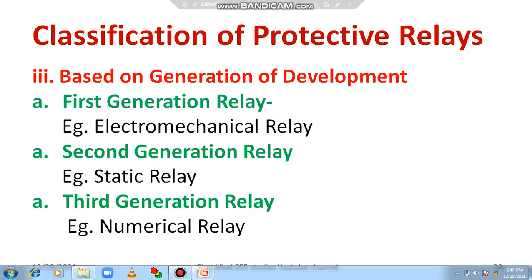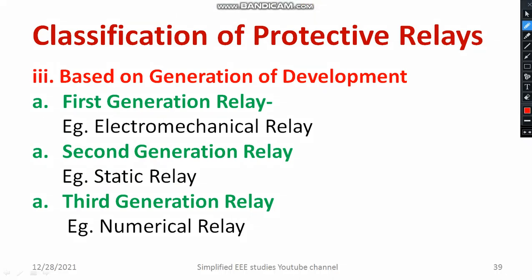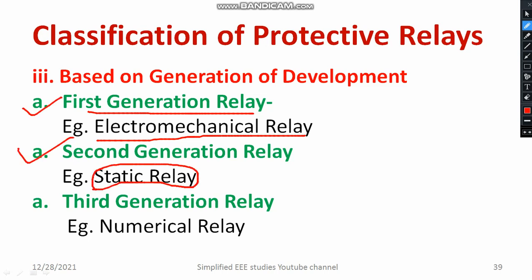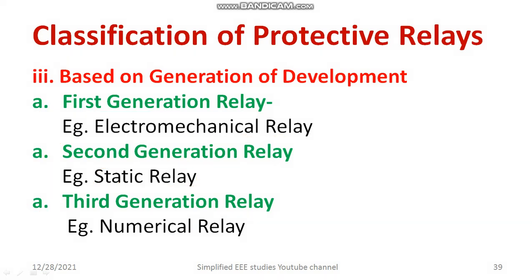Based on the generation of development: the electromechanical relay is known as the first generation relay, as it is the first stage of development — a very conventional type. Afterwards, electronic-based relay was developed, called the second generation relay, which is the static relay. The third generation relay includes the numerical relay based on the microprocessor, and nowadays it is advancing with microcontrollers.